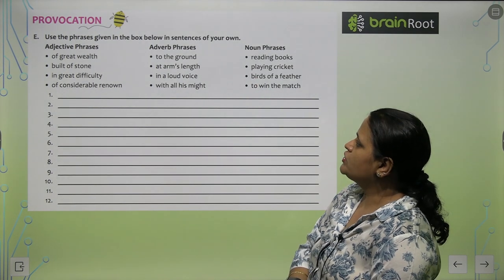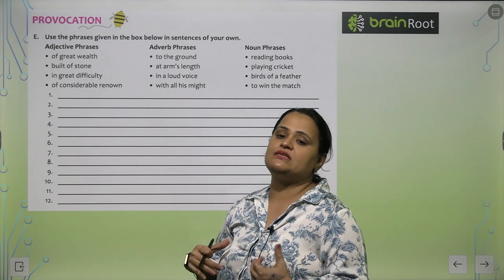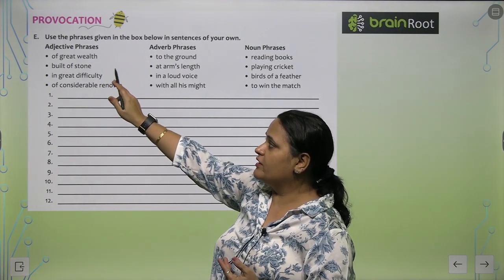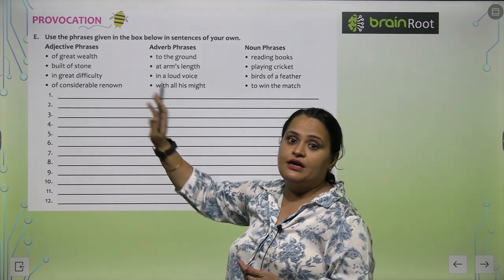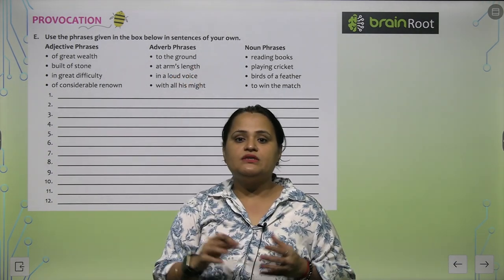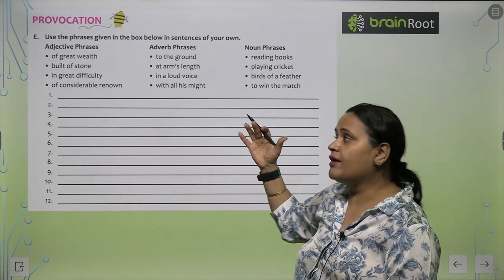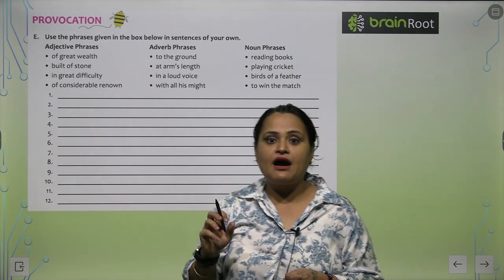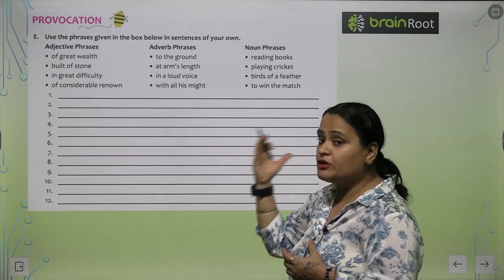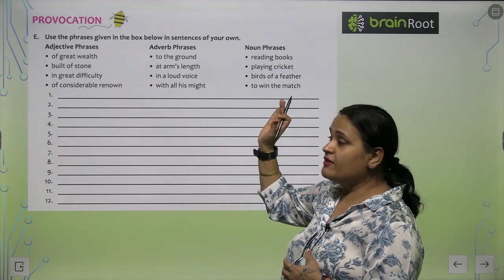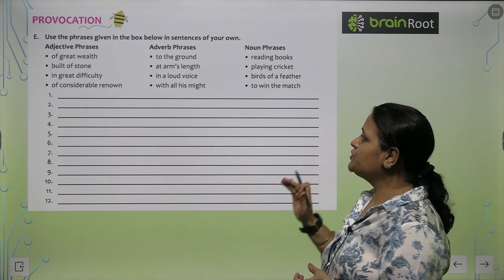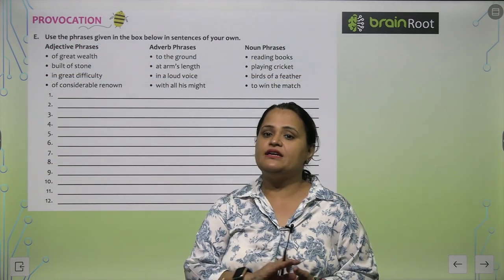Exercise E: Use the phrases given in the box in sentences of your own. For example, the adjective phrase 'of great wealth': 'My grandfather is a man of great wealth.' The adverb phrase 'to the ground': 'Our team is going together to the ground.' The noun phrase 'reading books': 'My mother likes reading books.' Build your own sentences using these phrases. I hope the phrases chapter is now clear to you.